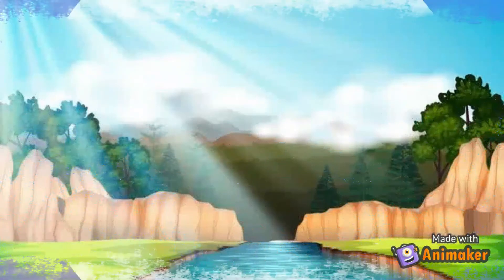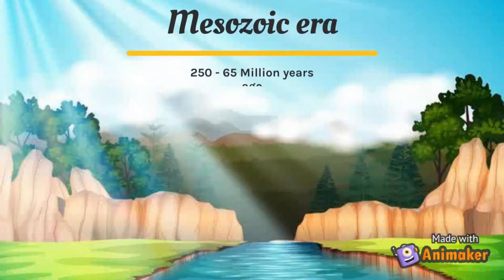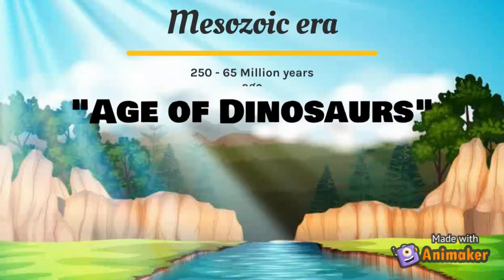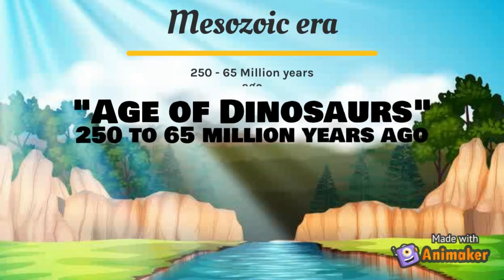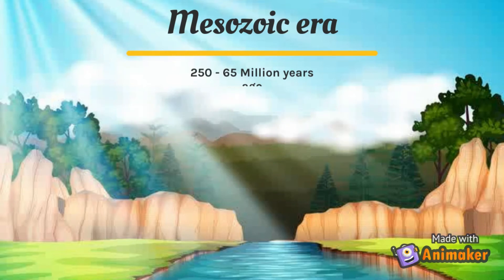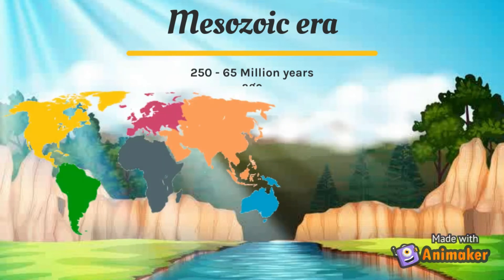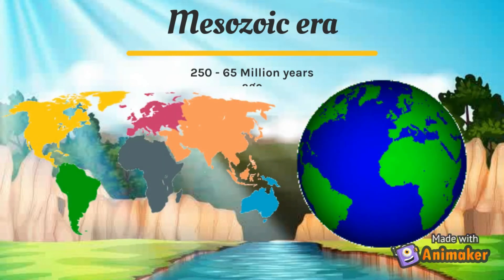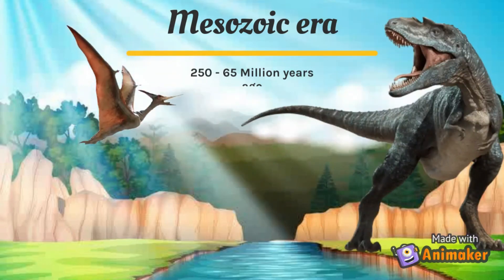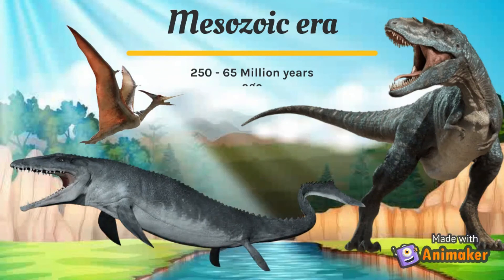The era that followed was the Mesozoic era. It is known as the age of the dinosaurs and lasted almost 180 million years, from approximately 250 to 65 million years ago. During this era, the continents began to move into their present-day configurations. The dinosaurs, pterosaurs, and ichthyosaurs were prominent in this era.